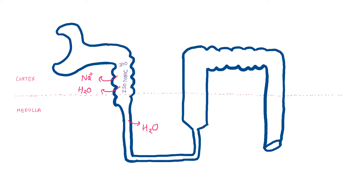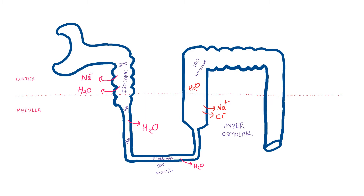From the loop of Henle, water can be reabsorbed freely but not the solutes. So as we move towards the medulla, the fluid inside the loop of Henle will become more and more hypertonic, with a maximum of 1200 milliosmol per litre. But in the thick ascending limb of the loop of Henle, about 25% of solutes are reabsorbed, which is responsible for the hyperosmolar medulla. Water cannot be reabsorbed here, so it remains inside the lumen and the fluid becomes hypotonic — that is why this segment is known as the diluting segment.